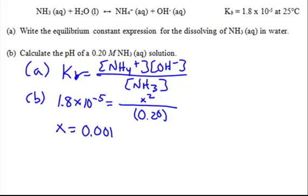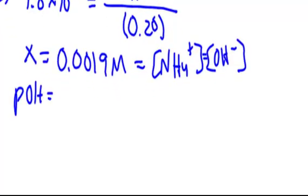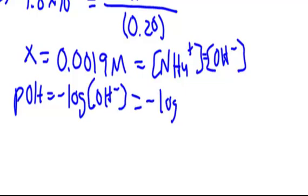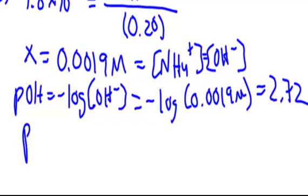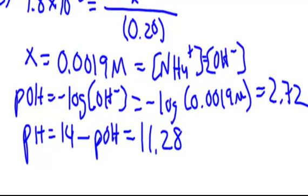We multiply Kb by 0.20 and then square root to find X. X equals 0.0019, which is both my ammonium (conjugate acid) and my hydroxide concentration. To find pH, pOH equals the negative log of the hydroxide — the negative log of 0.0019 — giving pOH equal to 2.72. Then pH equals 14 minus pOH, giving us a pH of 11.28, which proves it is a weak base.